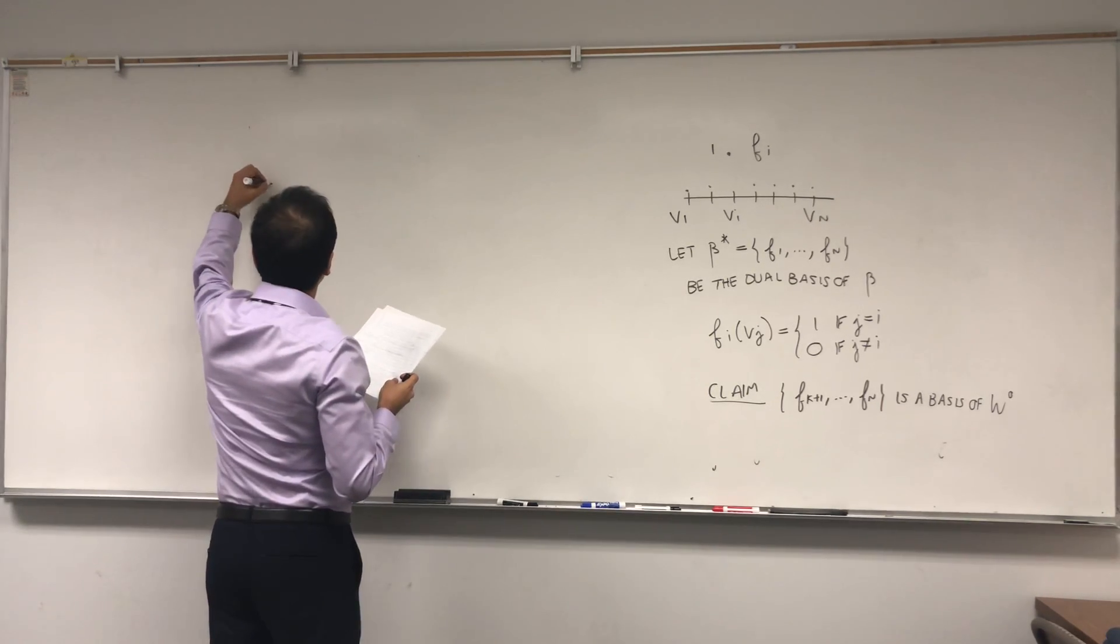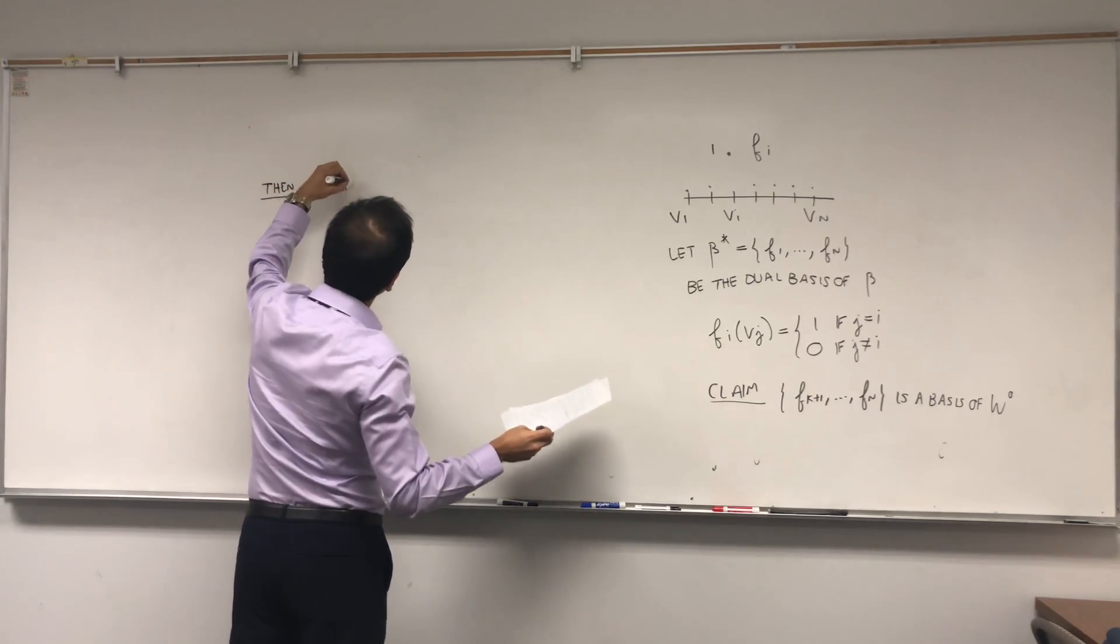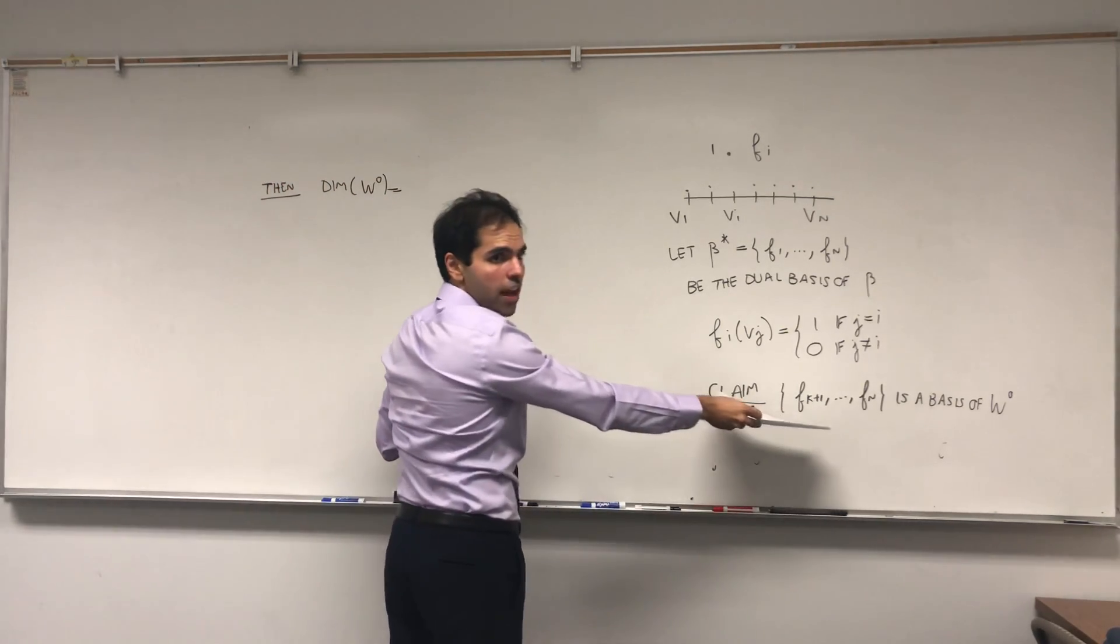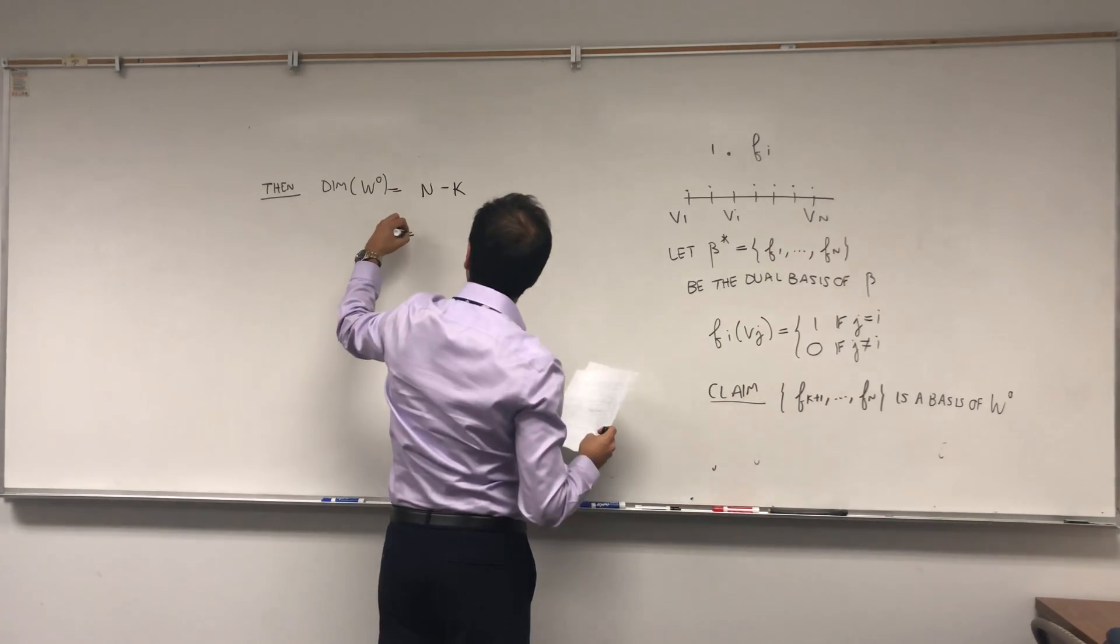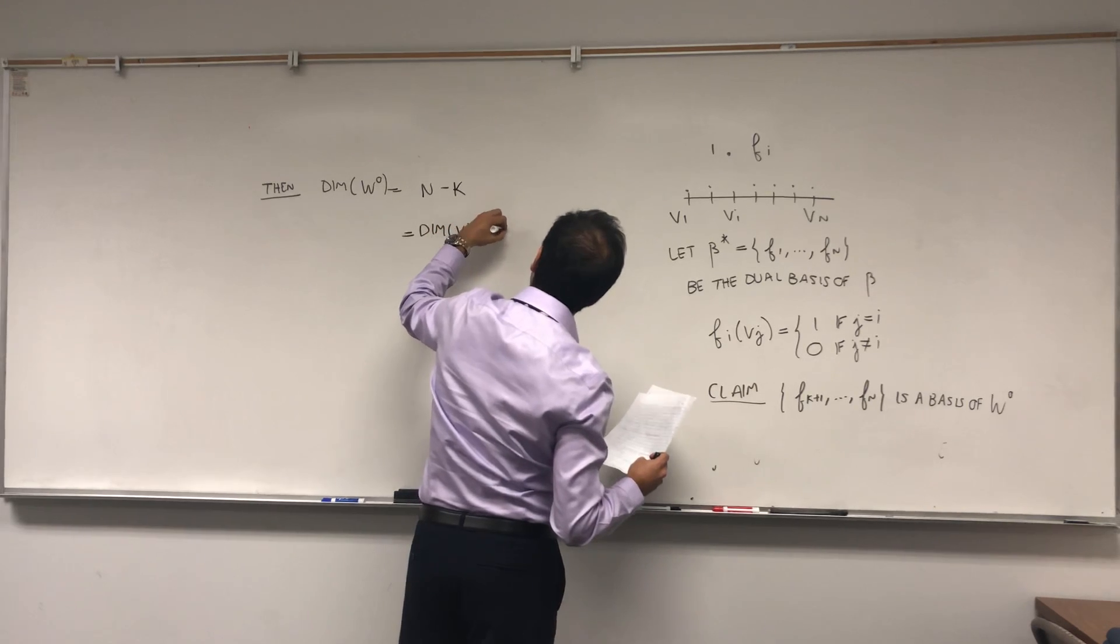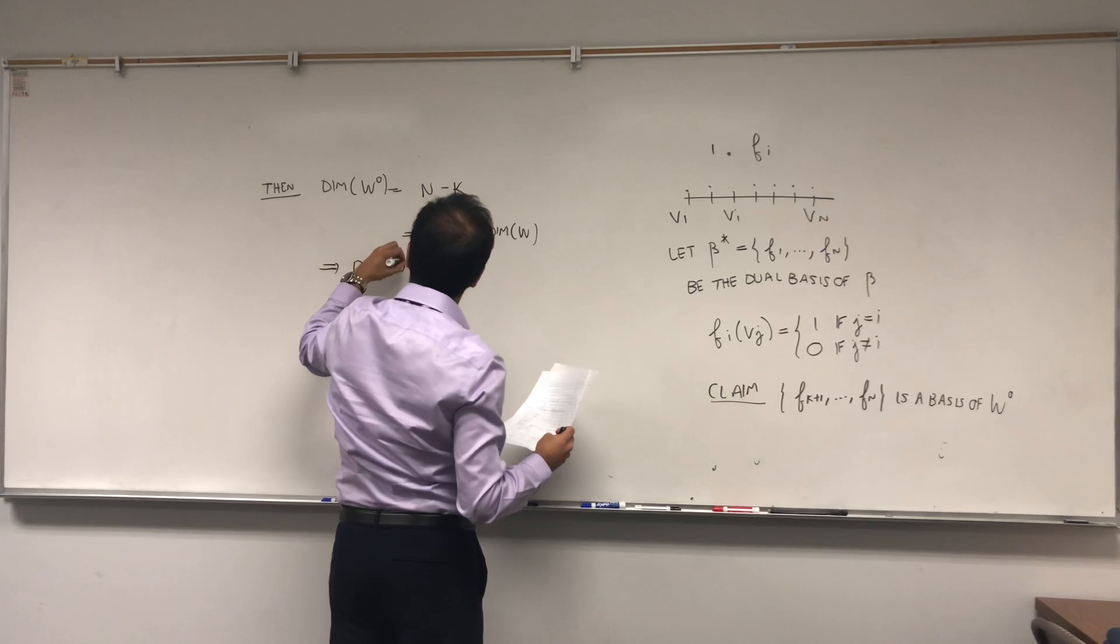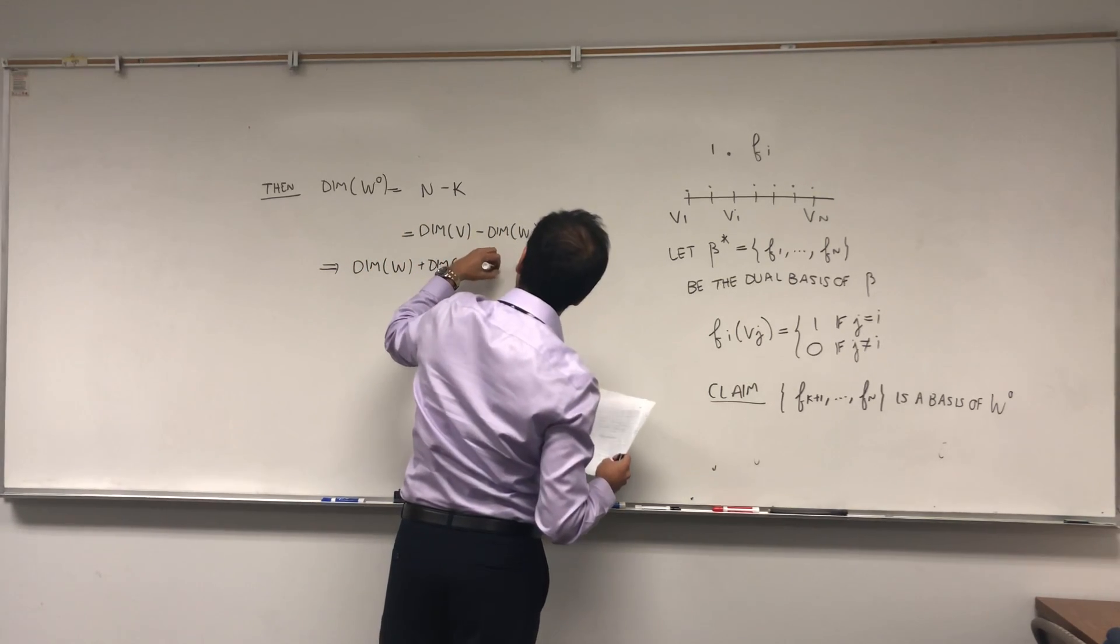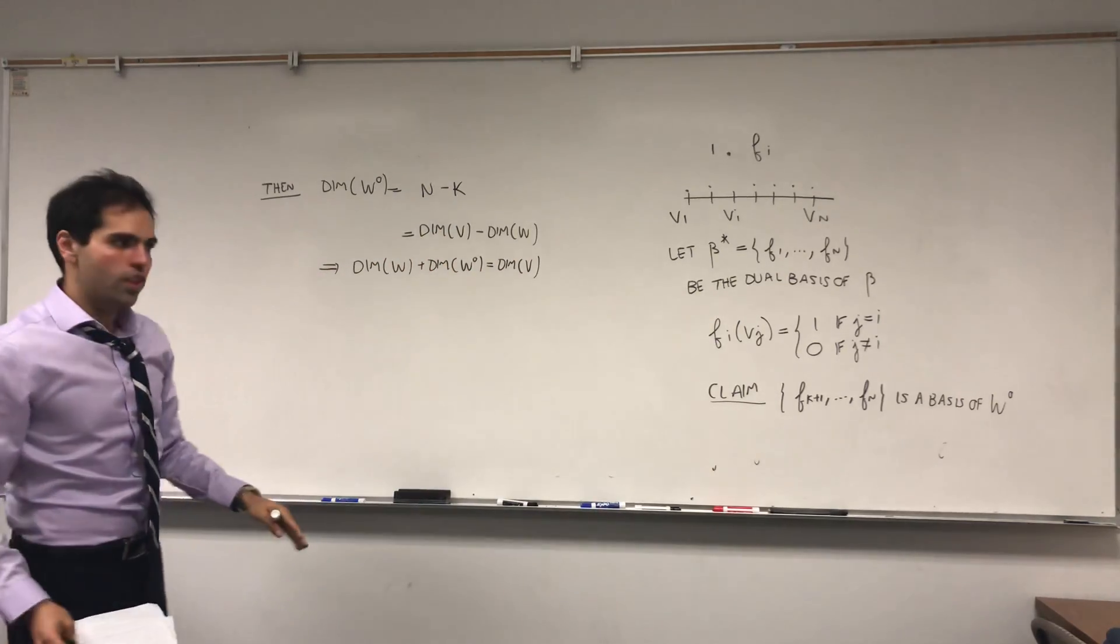So claim: Fk plus one up to Fn is a basis of W naught. Once we have that, we're actually done precisely because of this. So corollary, then what we get is the dimension of W naught is equal to the number of elements in that basis, which is n minus k. But we just said n was the dimension of V, k was the dimension of W, and then we're done. Then the dimension of W plus the dimension of W naught equals dimension of V.